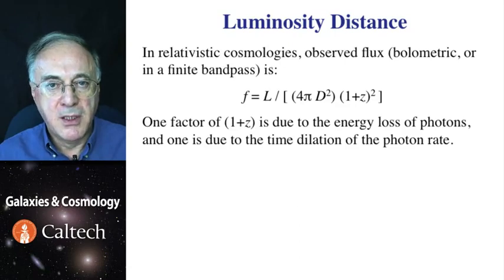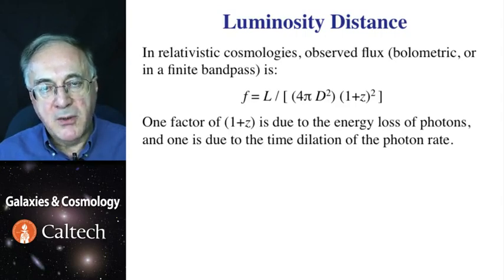In a simple Euclidean, non-relativistic universe, the flux would be luminosity divided by the area of the sphere, with the radius from here to there. In the case of an expanding universe, there are two terms of 1 plus redshift that come into play.